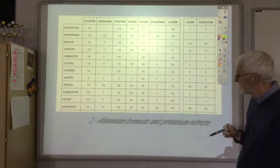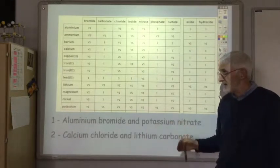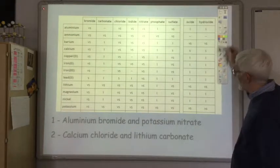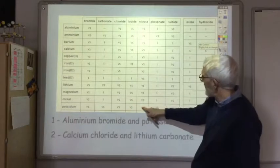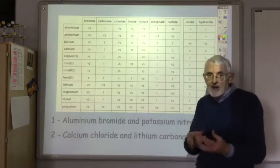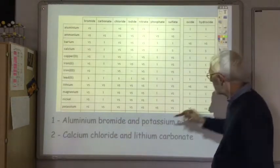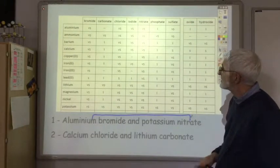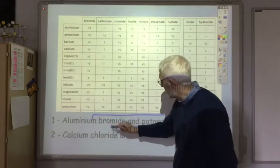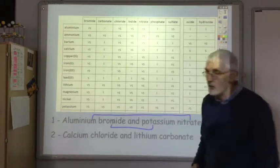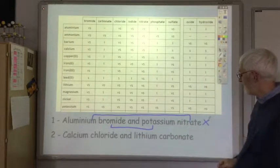Another type of question asks you to identify which case will produce a precipitate. For example, take aluminum bromide and potassium nitrate — both are soluble. The possible ion combinations — aluminum nitrate and potassium bromide — are also soluble, so no precipitate is produced. Now consider calcium chloride and lithium carbonate — both solutions are soluble.